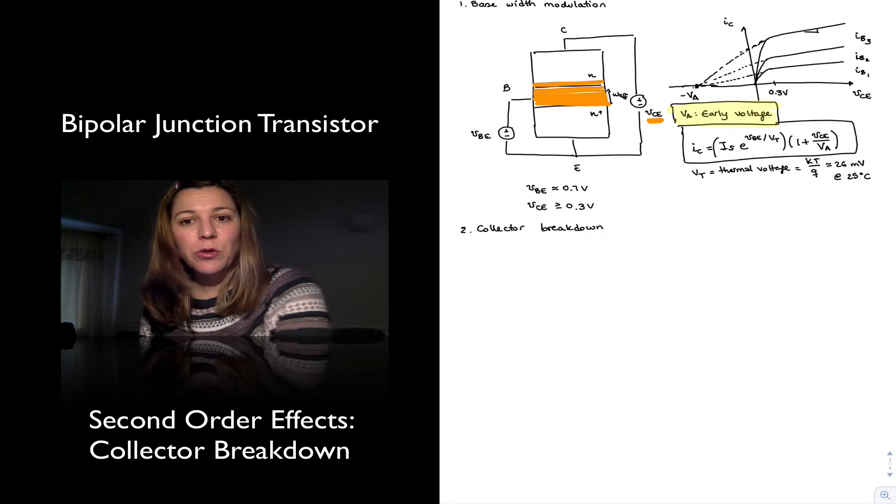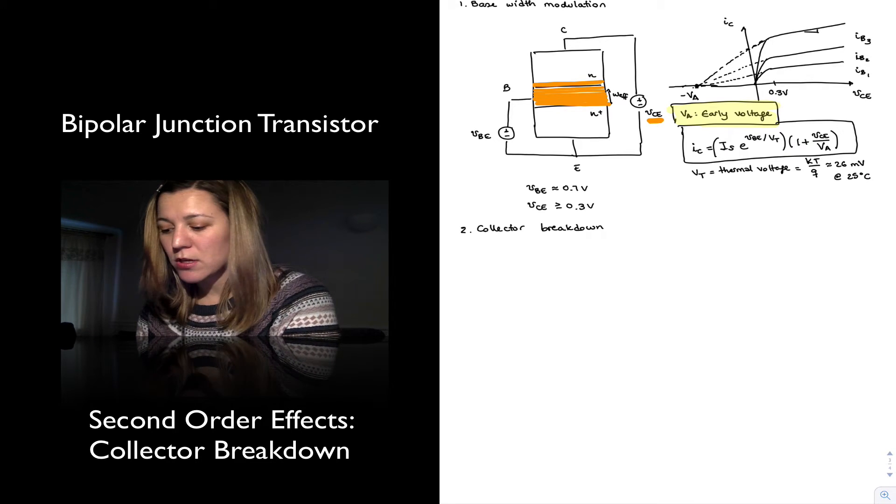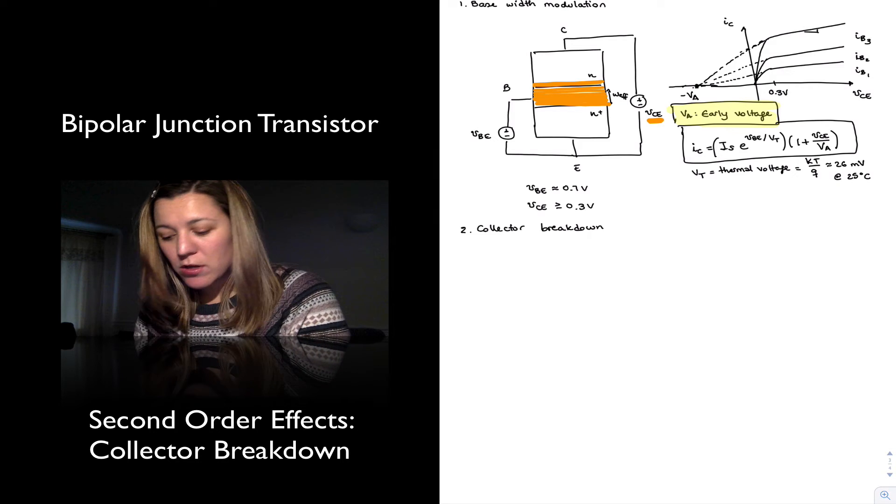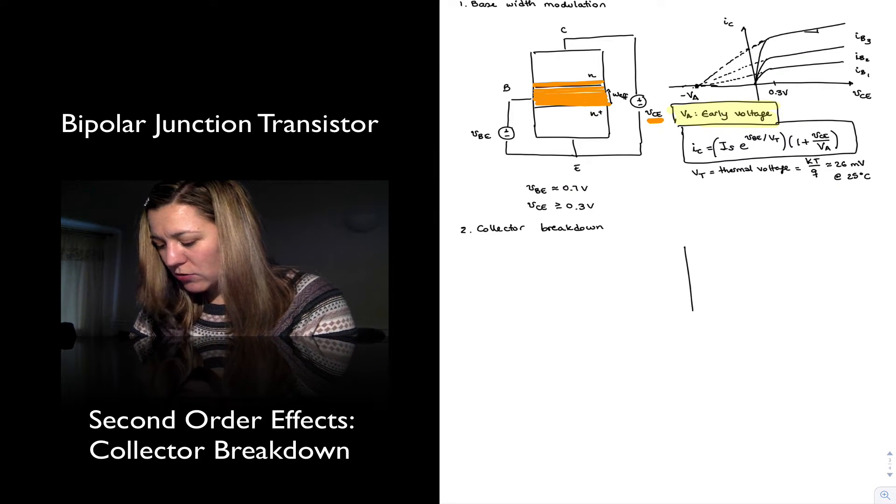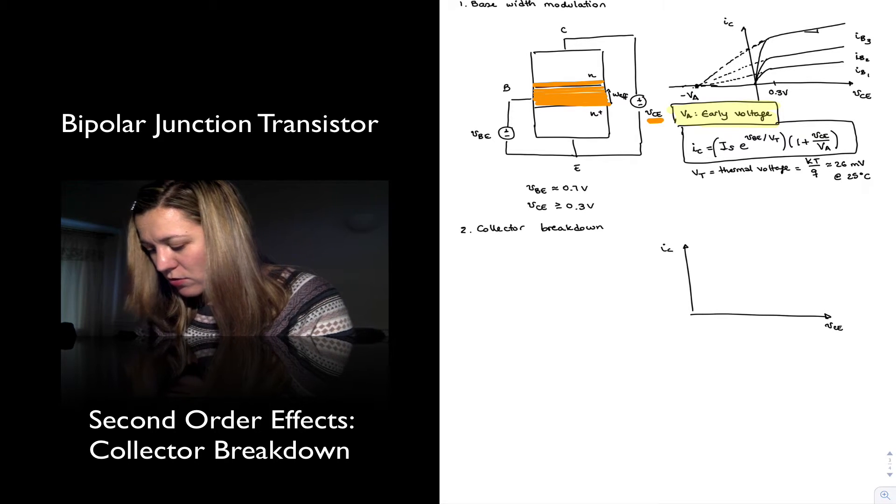And collector breakdown occurs when you continue to increase the collector to emitter voltage. When you look at the IV curve that we drew, it will appear that you have your VCE and your IC.